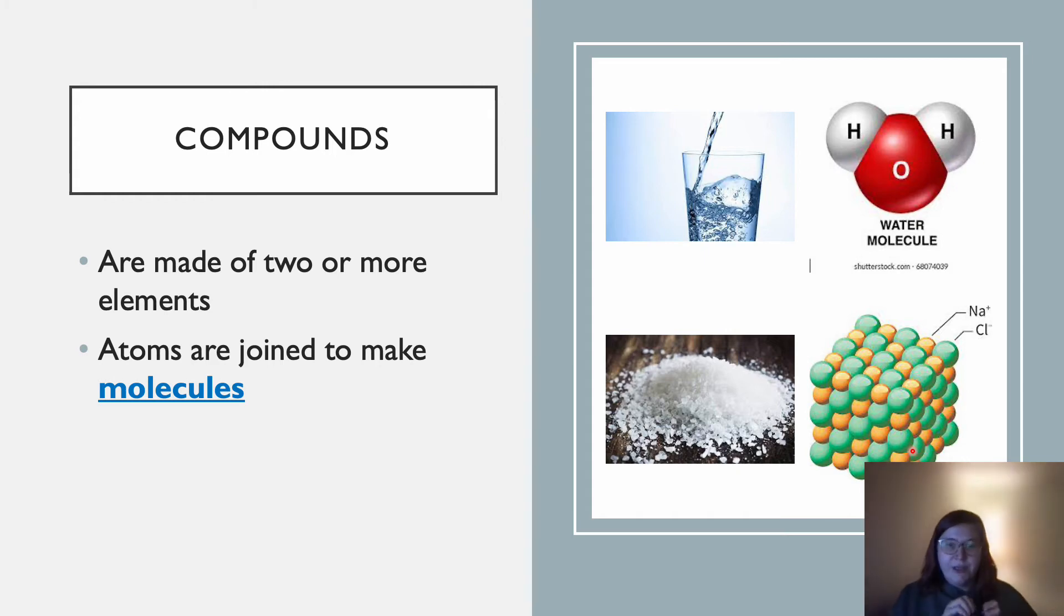This is called a lattice structure, where it has atoms joined together over and over in a structure. Or it can be something like this water molecule, where you have two hydrogens bonded to an oxygen.